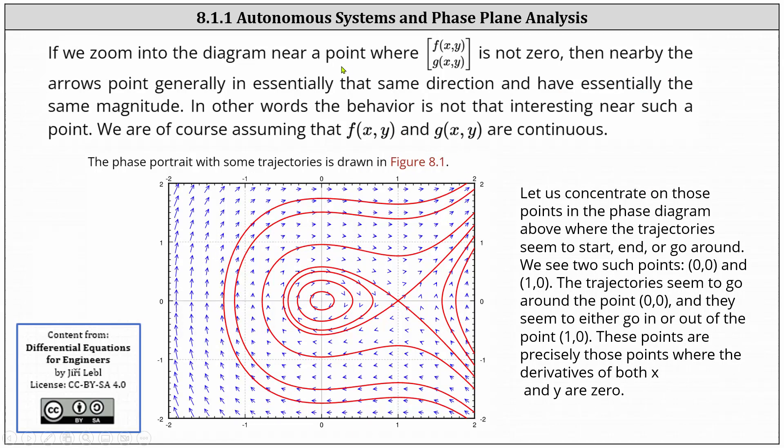If we zoom in on the diagram near a point where the vector [f(x,y), g(x,y)] is not zero, then nearby the arrows point generally in essentially the same direction and have essentially the same magnitude. In other words, the behavior is not that interesting near such a point. We are of course assuming that f and g are continuous.